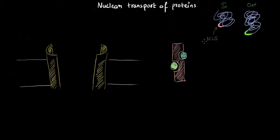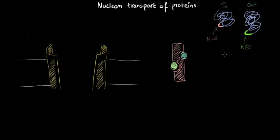The NLS is recognized by a certain receptor which brings the protein inside the nucleus. For the protein that needs to move out of the nucleus, there is a receptor present inside the nucleus which recognizes a stretch of peptide — a stretch of amino acids — on that protein and helps transport it out. This signal sequence is called NES, or nuclear export signal. So for import, the signal on the protein is called NLS, and for export, it is called NES.